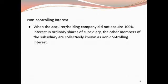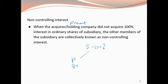For non-controlling interest: when the acquirer — the holding company or the parent company, and these terms are used interchangeably — did not acquire 100% of the shares of the subsidiary, the other members of the subsidiary are collectively known as non-controlling interest. For example, if the parent acquires 80% of the subsidiary's shares, then the NCI, which is the other shareholders' portion, would be 20%.